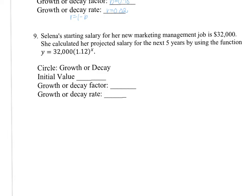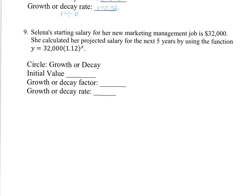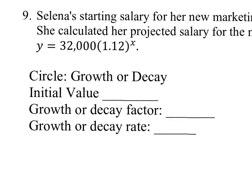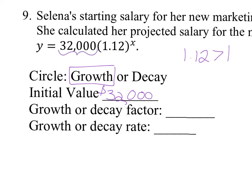Lastly, number 9: Selena's starting salary for her new marketing management job is 32,000. She calculated her projected salary for the next 5 years using the function y equals 32,000 times 1.12 to the x power. Is Selena growing or decaying? 1.12 is indeed greater than 1, so it is growth. Her initial value is 32,000. Her growth factor is what b equals, which is 1.12. Her growth rate: r equals b minus 1, so 1.12 minus 1 equals 0.12.